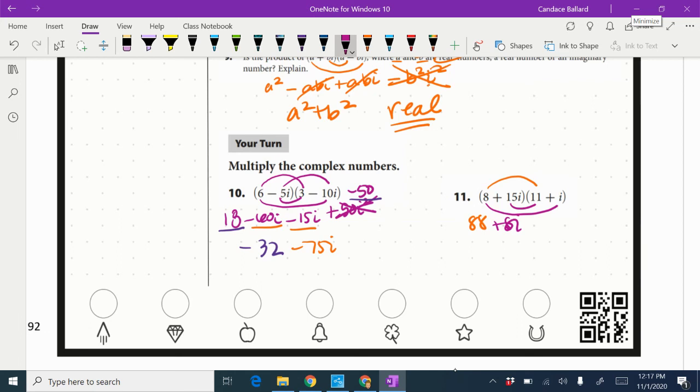And 15i times 11 is 165i. And then 15i times i is positive 15i squared, which is going to be better known as negative 15.